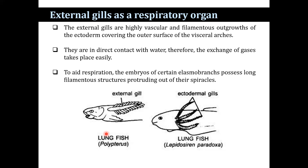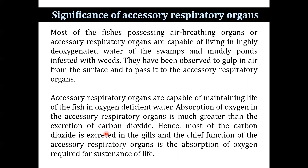In some species, the external gills are also highly vascular and filamentous; they are outgrowths of the ectoderm covering the outer surface of the visceral arches, in direct contact with water, and also subserve gaseous exchange. In certain elasmobranch embryos, long filamentous structures protrude from their spiracle. During development, the fifth gill arch does not develop gill lamellae, and its embryonic gill forms a rudimentary structure known as gill mast. The air-breathing organs or accessory respiratory organs develop from the gill mast. In some species, gill arches other than the fifth gill arch also take part in the formation of the accessory respiratory organ. The gill lamellae, which normally develop on gill arches for aquatic respiration, become modified to form the respiratory epithelium of the suprabranchial chamber, dendritic organs, and air sacs for aerial respiration.